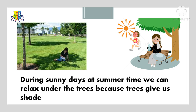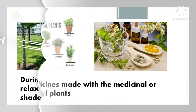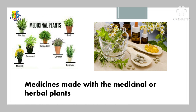Look at these pictures. During sunny days at summer time, we can relax under the trees because trees give us shade. Medicinal plants — medicines are made with medicinal or herbal plants. Examples: aloe vera, basil, lemon balm, peppermint, lavender, marigold, and rosemary.